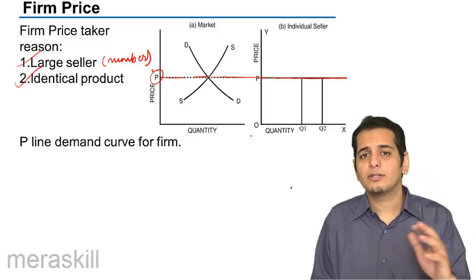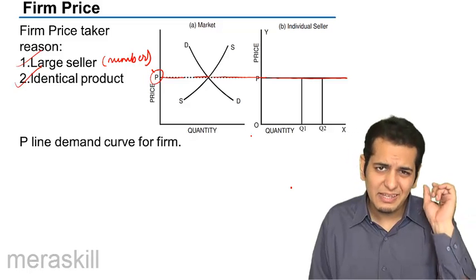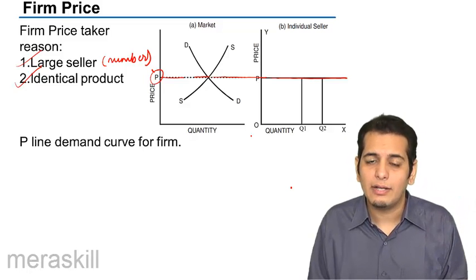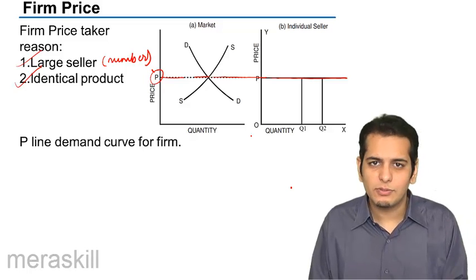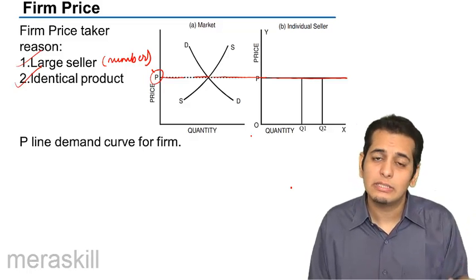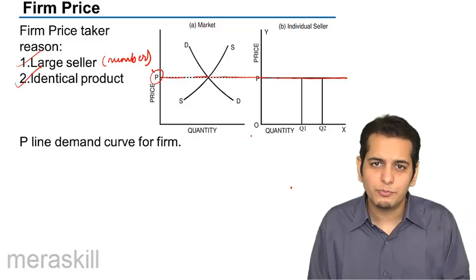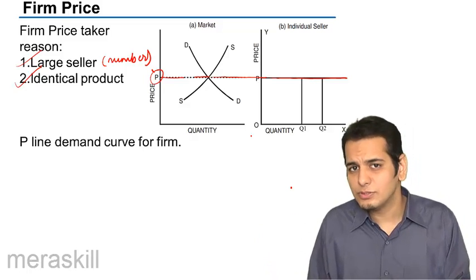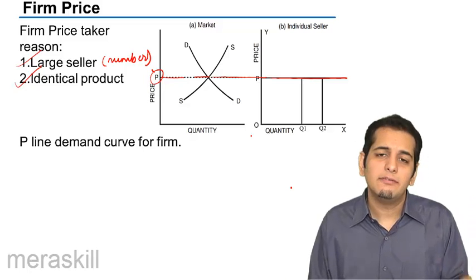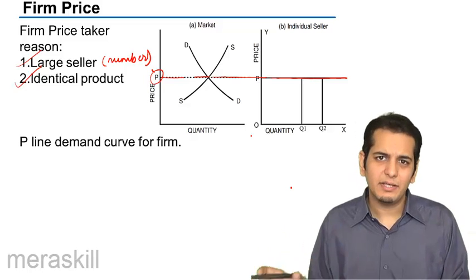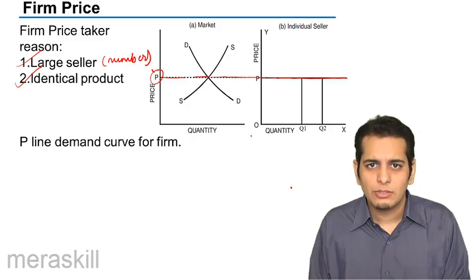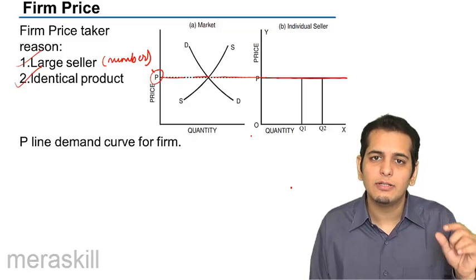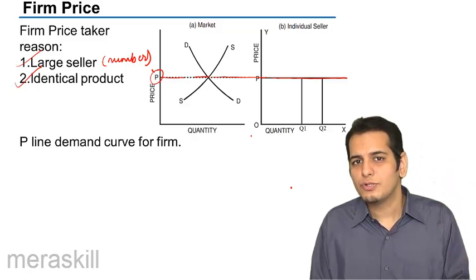The other reason is that the product is identical. Since all the sellers are selling the same kind of product, an individual seller can't change the price. If he increases the price, buyers won't buy from him because the same product is being sold by other sellers at a comparatively lower price, so he will lose business. Again, if he reduces the price, he will be sold out. But in a perfectly competitive market, the seller will always be sold out anyway — so if he is selling at a reduced price, he will incur a reduction in revenue to the tune of that reduction.